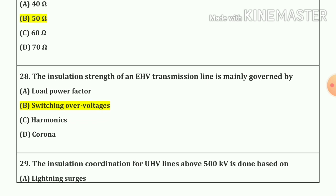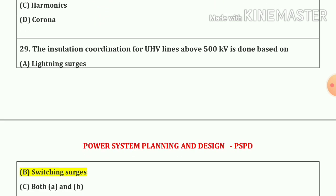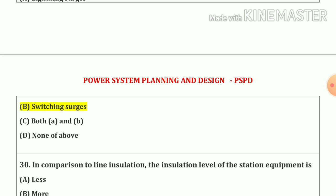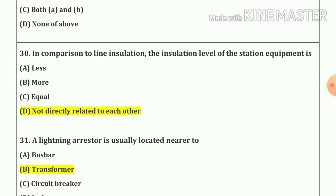Question number 28. The insulation strength of a UHV transmission line is mainly governed by switching over-voltages. Answer is option B. Question number 29. The insulation coordination of UHV lines above 500 kV is done based on switching over-voltages.